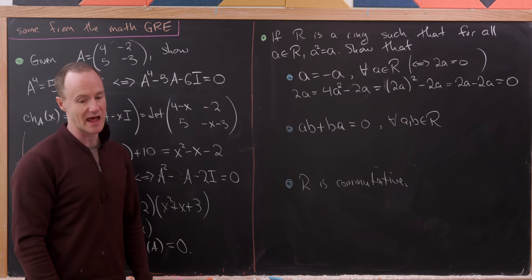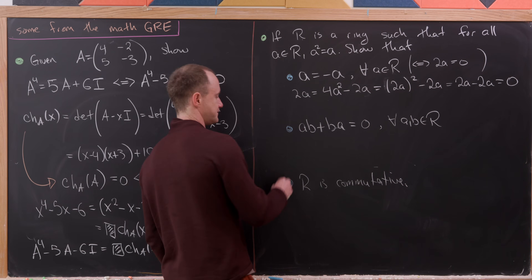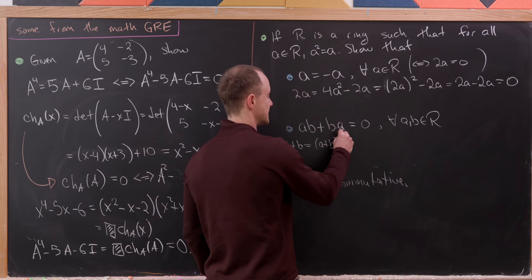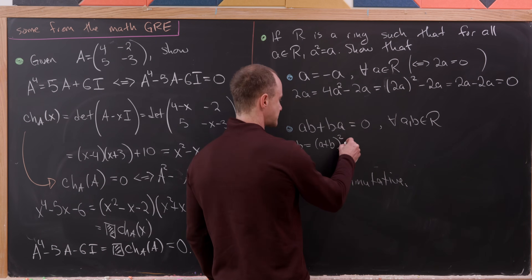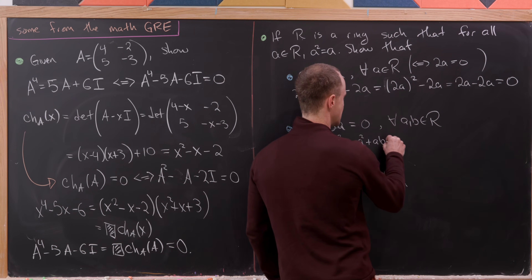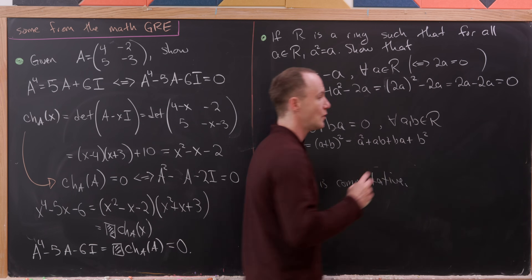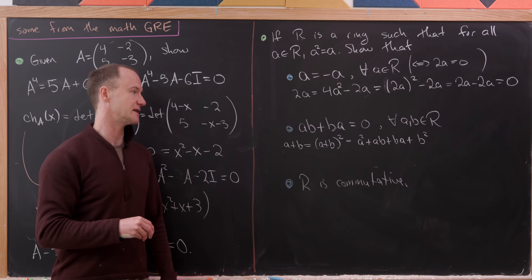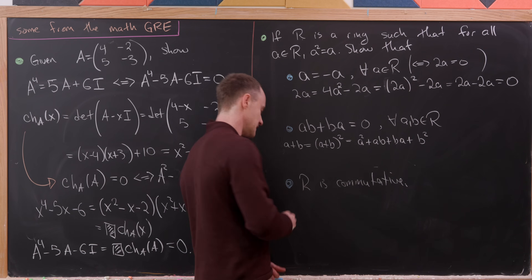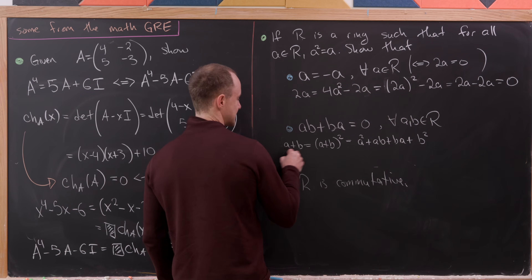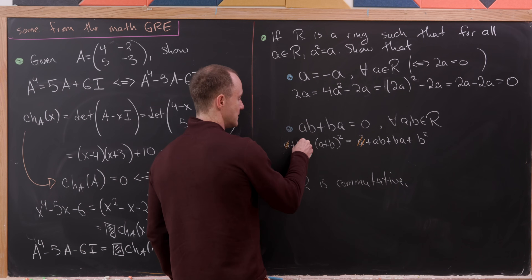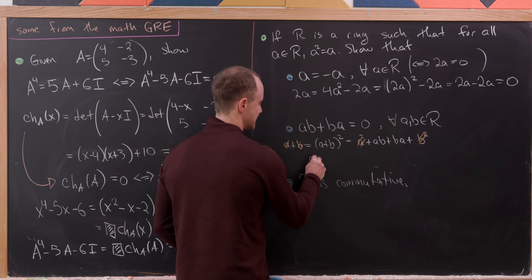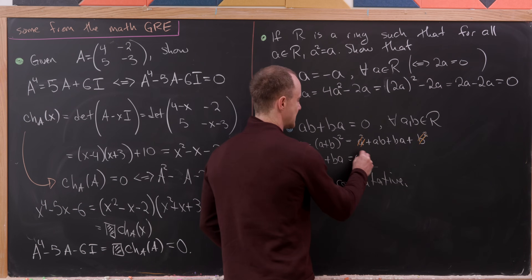To show ab + ba = 0: start with a + b = (a + b)², which expands to a² + ab + ba + b². Since a² = a and b² = b, we can cancel those from both sides, leaving 0 = ab + ba. So ab + ba = 0.